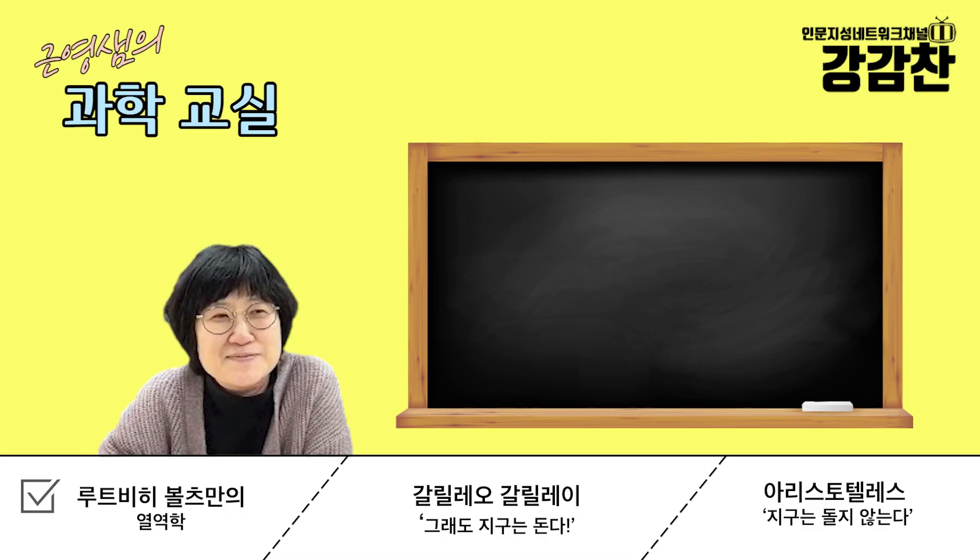오늘 남은 시간에 97쪽으로 넘어가서 두루데를 비롯한 사람들과의 논쟁이라는 부분에 나와 있는 얘기를 같이 보려고 합니다. 설명이 조금 필요해서 칠판을 좀 쓸게요.